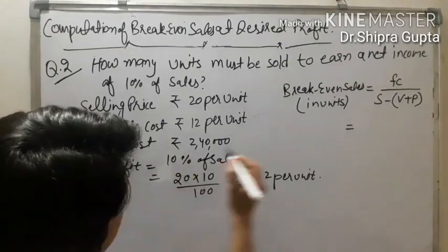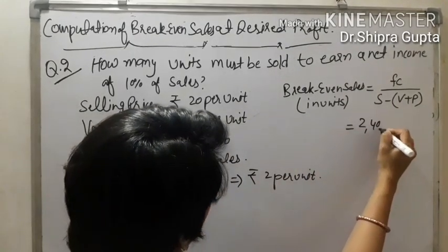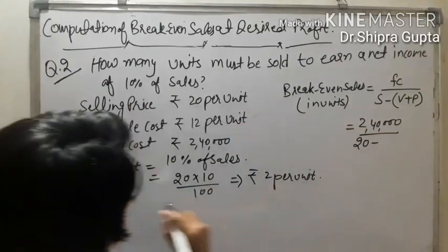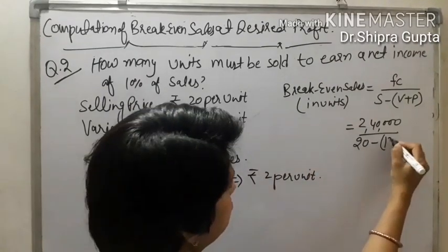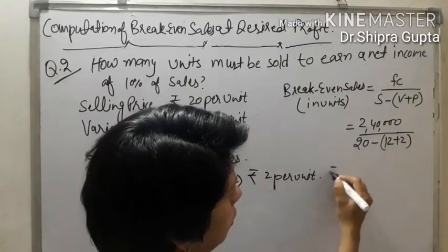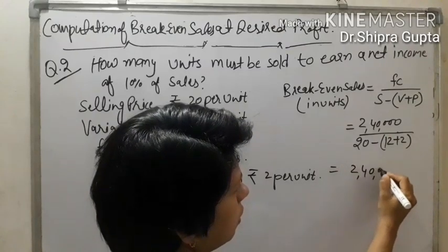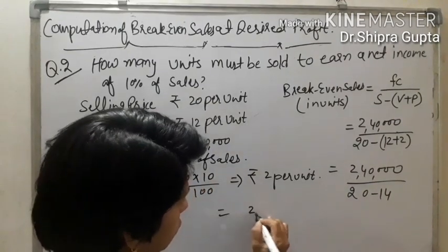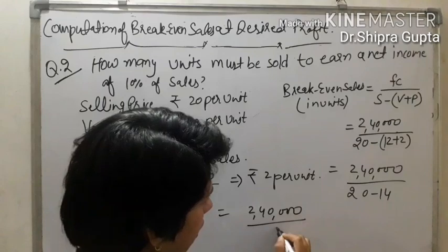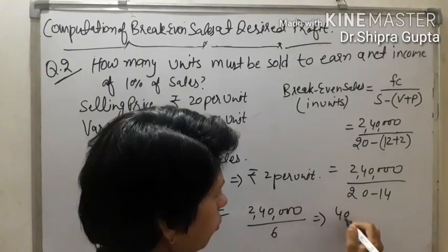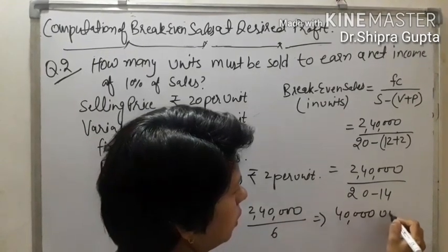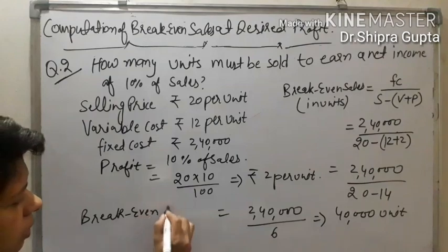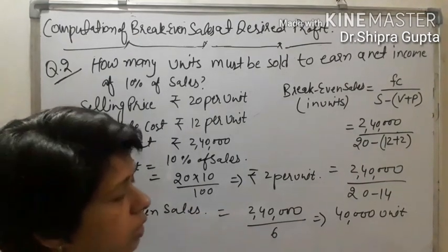Putting in the values: Fixed Cost = 2,40,000 divided by (Sales 20 − Variable Cost 12 + Profit 2) = 2,40,000 / (20 − 14) = 2,40,000 / 6 = 40,000 units. Therefore, the break-even sales must be 40,000 units.